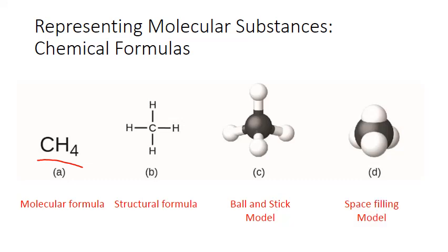And finally, the space-filling model. The spheres represent the space occupied by the atom, including its electrons. The spheres overlap because in covalent bonds, the outer orbitals of the atoms overlap in order to share electrons.